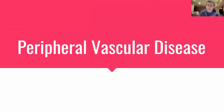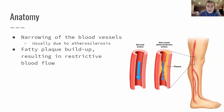Today we're going to be going over peripheral vascular disease. This is probably one of the most common artery-vein kind of diseases that shows up on the boards. This is one that's going to come back to get you with the intermittent claudication, and we'll get into that as we move through our subject today.